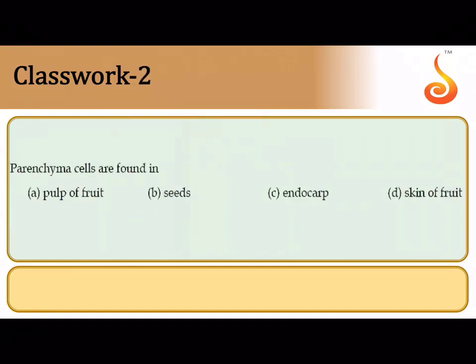Parenchyma cells are found in most seeds because seeds are mostly involved in the storage of food. There is a lot of endosperm in some seeds, and even after it is exhausted, the seed leaves or cotyledons store food. So the storage tissue in the plant is parenchyma.